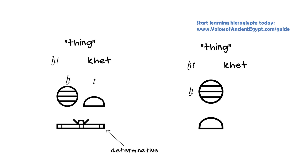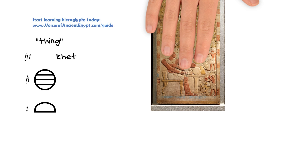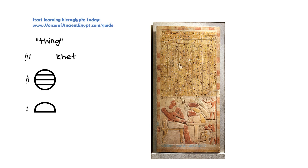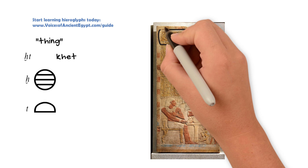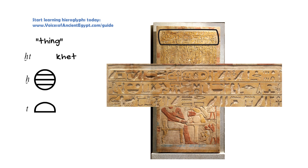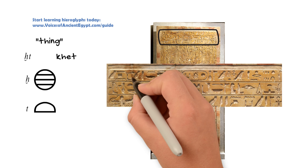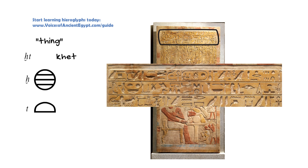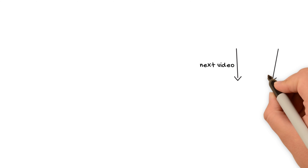So it's also sometimes written without that determinative and just the third H and the T. You'll see this all over the place, because just like in English we use the word 'thing' a lot, in Ancient Egyptian they used the word 'thing' an awful lot also. Alright, that's it for third H. I'll see you in the next video.